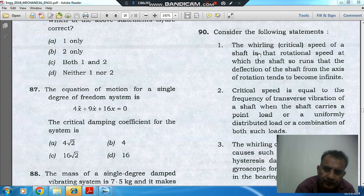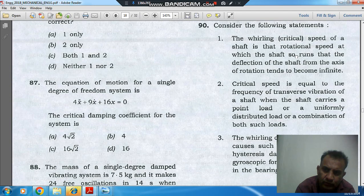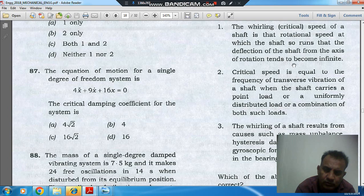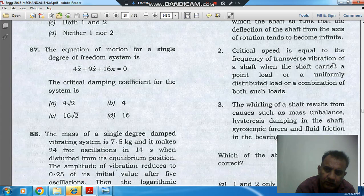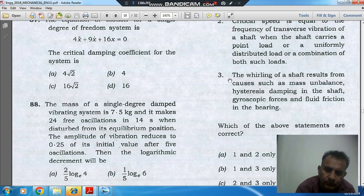Consider the following statements. 1. The whirling or critical speed of a shaft is that rotational speed at which the shaft so runs that the deflection of the shaft from the axis of rotation tends to become infinite. 2. Critical speed is equal to the frequency of transverse vibration of a shaft when the shaft carries a point load or a uniformly distributed load or a combination of both such loads.